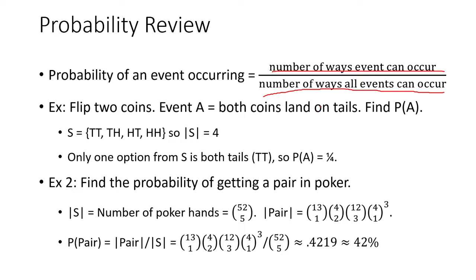So a simple example would be flipping two coins. Let A represent the event that both coins land on tails. We're going to go ahead and compute the probability of that. So we're going to first list off all the possible ways coin flips can happen. We have tails tails, tails heads, heads tails, and heads heads. And we're going to put all of these in our set S which is going to represent our sample space.